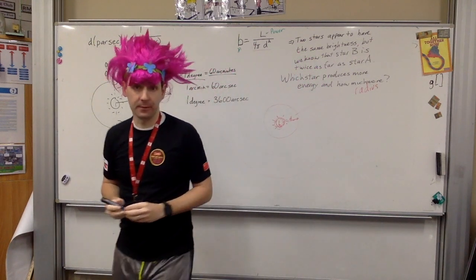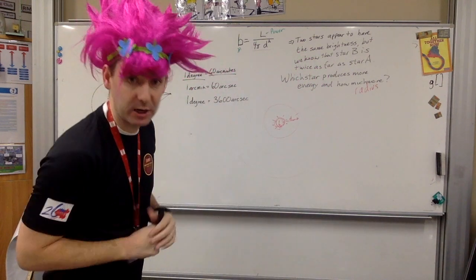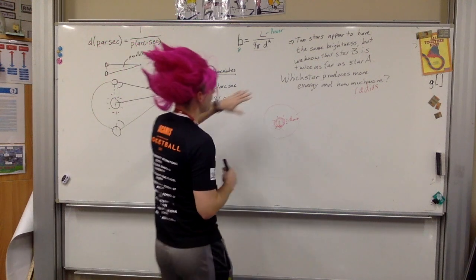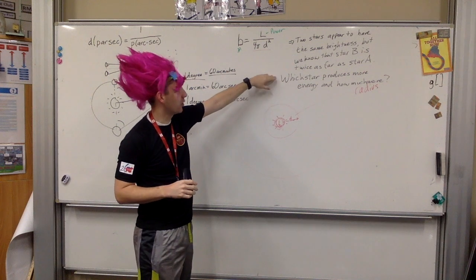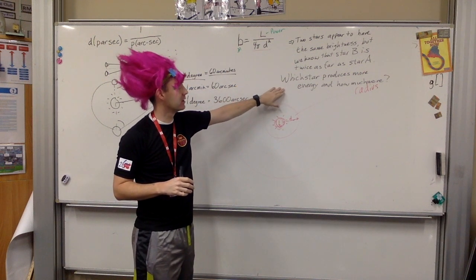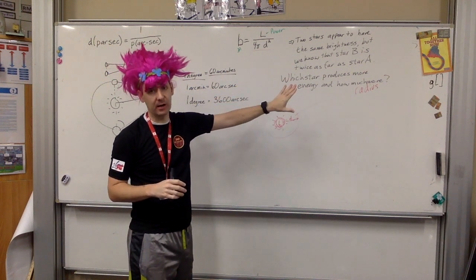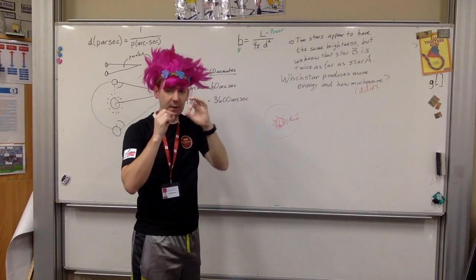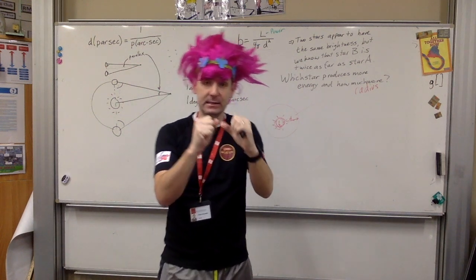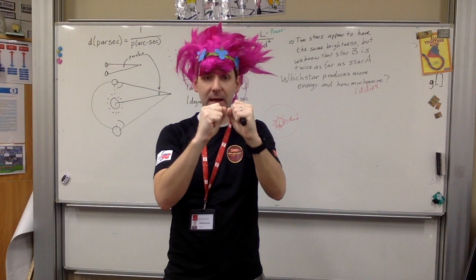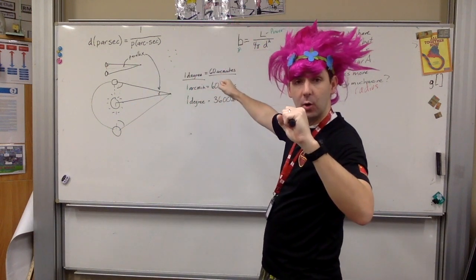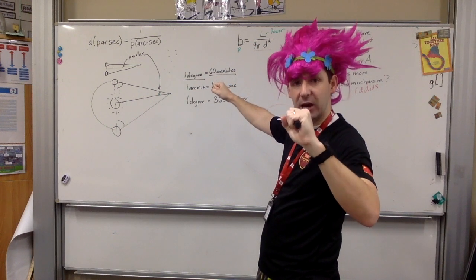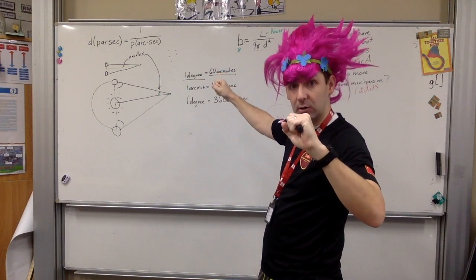We don't got a lot to go off of. Other than that we know it's twice as far away. Now, the first part of this question should be fairly easy to determine. The first part of the question, which star produces more energy? Star B or star A? Well, if they appear to be the same brightness and they were the same distance, then they'd have to be letting out the same power. If star B is further away from you, why would it look as bright as star A? It should look dimmer.